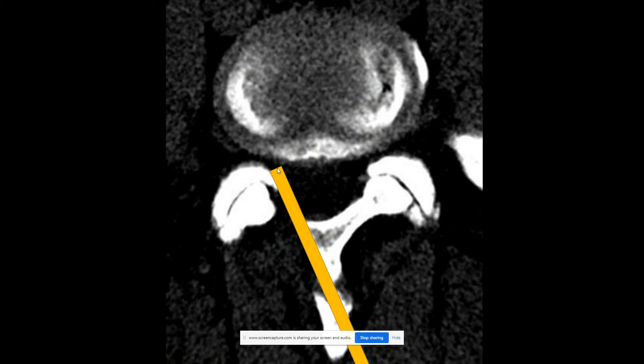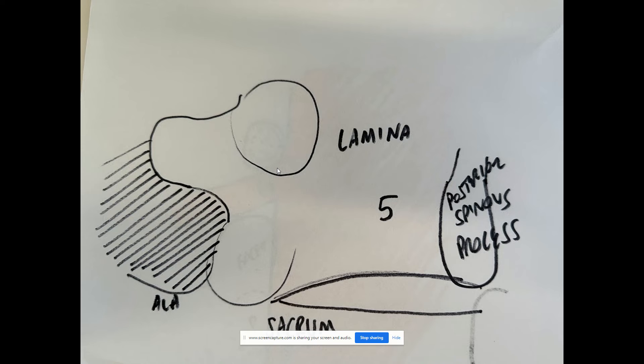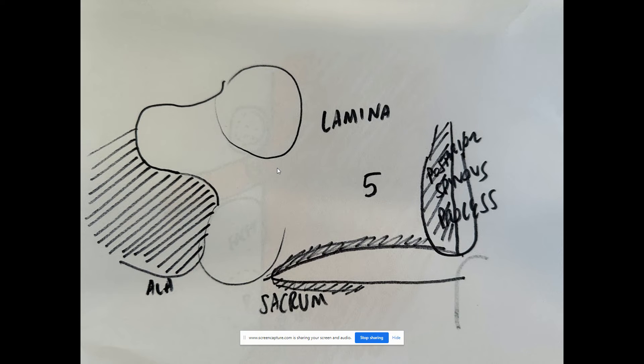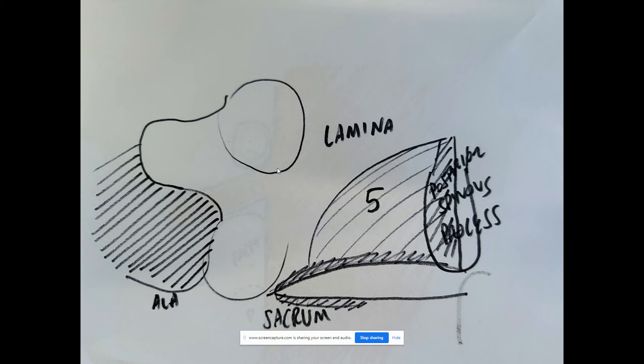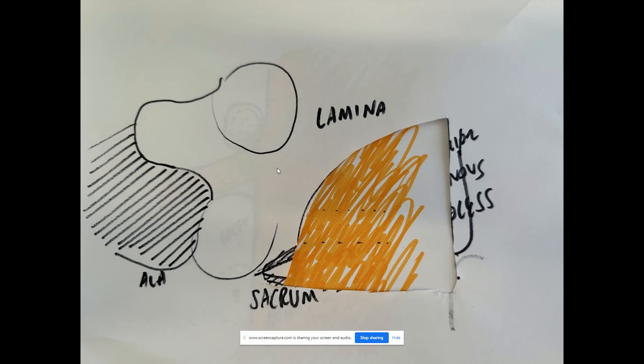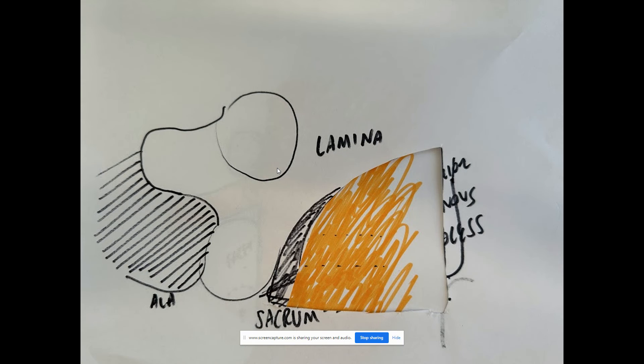You need the right angle. So basically, the technique is thinning the inferior aspect of the lamina of L5, superior aspect of the sacrum, and the lamina foraminotomy portion, and then removing it, finding the dura. And then the technique is just keep going lateral.